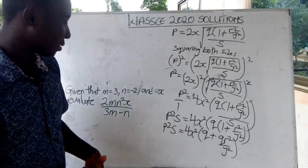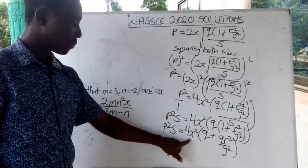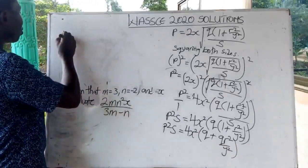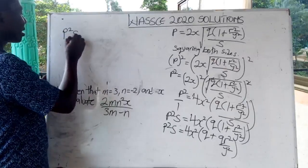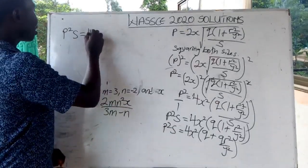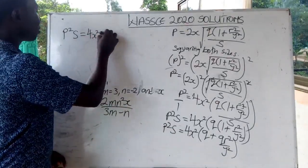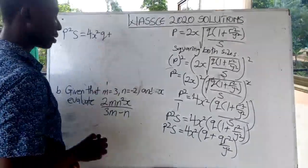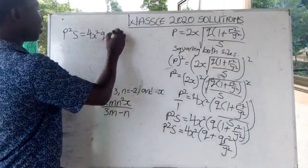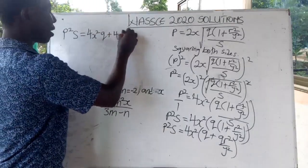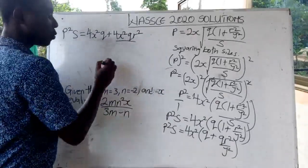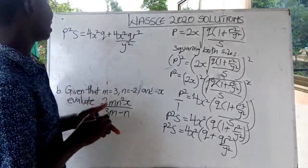Let's multiply 4s squared by everything inside this bracket. So when I do that I am going to get P squared x is equal to 4s squared Q plus 4s squared Q r squared over y squared.